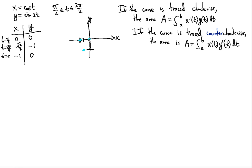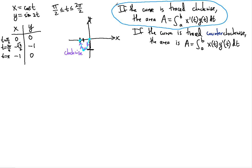So we're back at the x-axis. As you can see, this curve is traced clockwise — because this is the direction of the clock. So we can draw the arrows to show where the curve is going: clockwise. Since it's traced clockwise, we know which formula we're going to use — precisely the clockwise one.